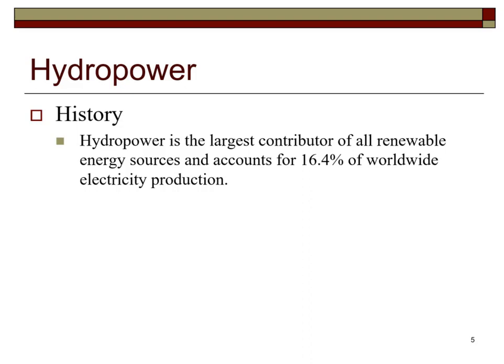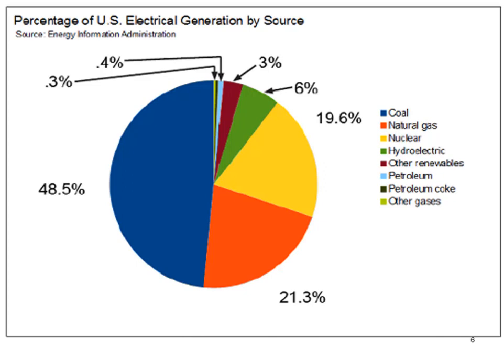Hydropower is the largest contributor of all renewable energy sources and accounts for 16.4% of worldwide electricity production. 6% of the United States' electricity is supplied by hydropower.